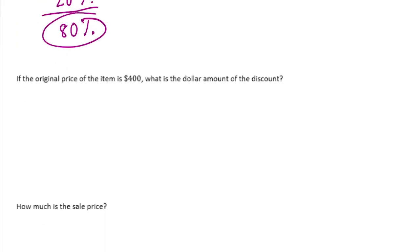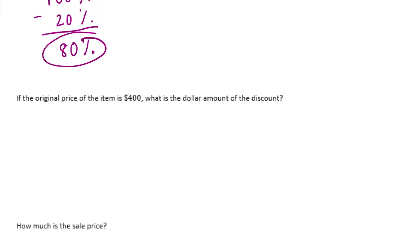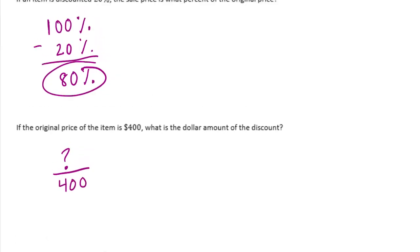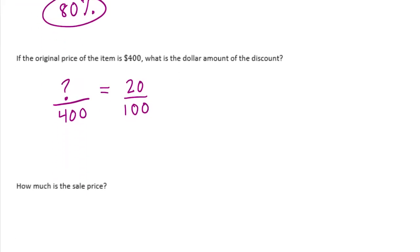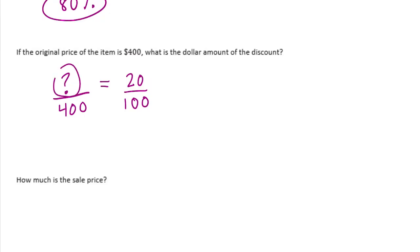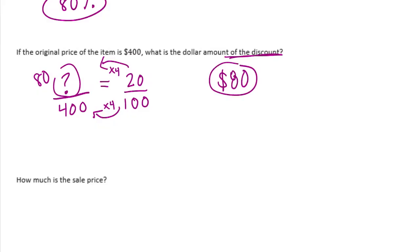If the original price of an item is $400, what is the dollar amount of the discount? We know the original price is $400 and the discount was 20%, which is 20 hundredths. We need to find the missing factor: 100 times 4 is 400, so 20 times 4 gives us 80.